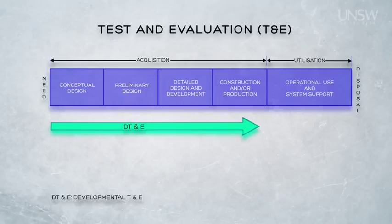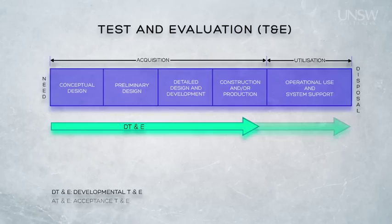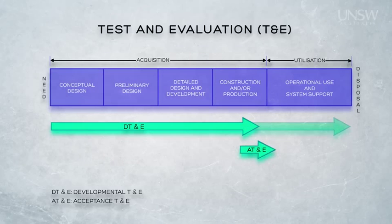Developmental T&E activities may also occur during utilisation to support activities such as the development of modifications. Acceptance Test and Evaluation, or AT&E, represents the formal testing conducted to enable the customer to verify the system and therefore accept it from the developer. AT&E effectively forms the boundary — the transition — between the acquisition phase and the utilisation phase, and as such is a very important contributor to the formal qualification review.